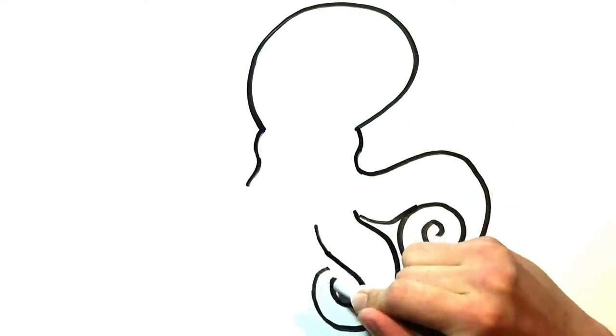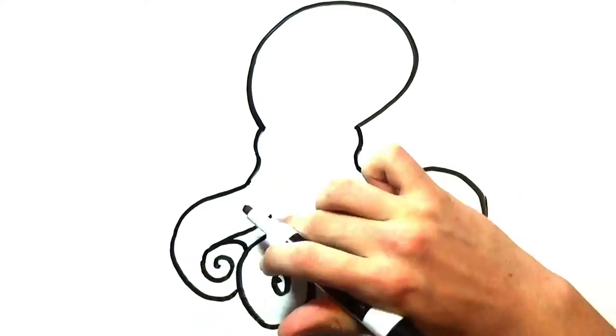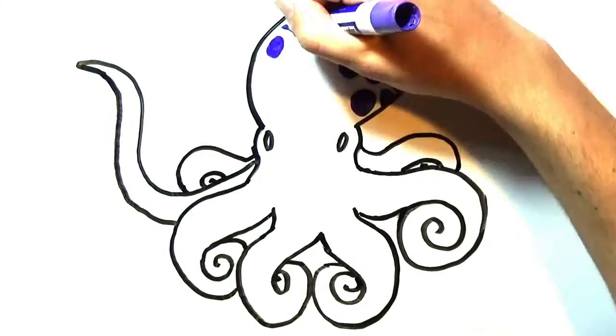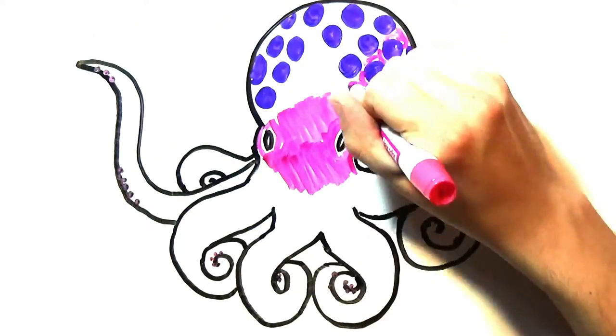Take the octopus for example. Two thirds of its neurons are not in its head, but in its limbs, which are capable of incredible perception, changes in movement, and camouflage.